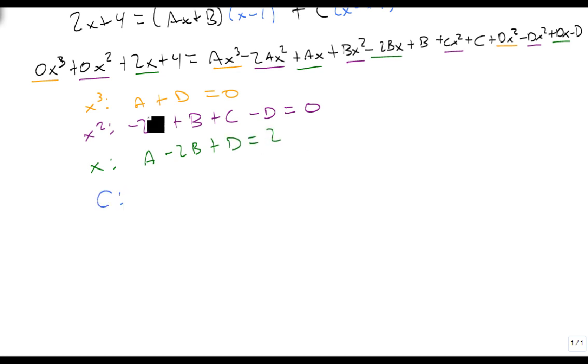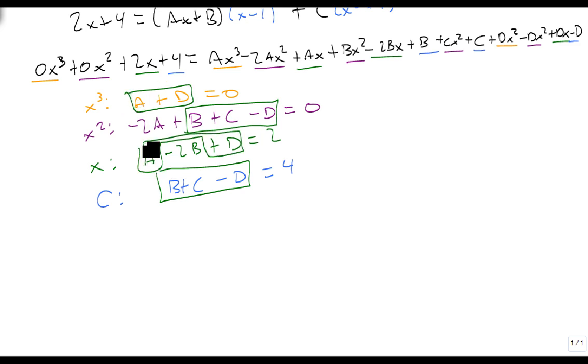And last but not least, our constants. It gives me b, plus c, minus d equals 4. And so what I'm going to use here is I'm going to recognize that b, plus c, minus d and a, plus d are the same. So I'm going to replace this one with this one, which is equal to 0.